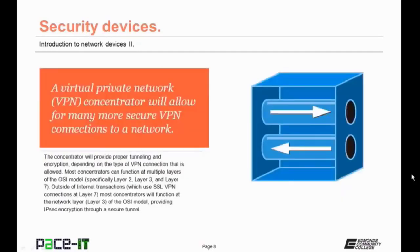Let's move on to the virtual private network concentrator, the VPN concentrator. This will allow for many secure VPN connections to a network. The concentrator will provide proper tunneling and encryption depending upon the type of VPN connection allowed. Most concentrators can function at multiple layers of the OSI model — specifically at layer 2, layer 3, and layer 7. Outside of internet transactions which use an SSL VPN connection at layer 7, most concentrators will function at layer 3 of the OSI model, providing IPSec encryption through a secure tunnel.